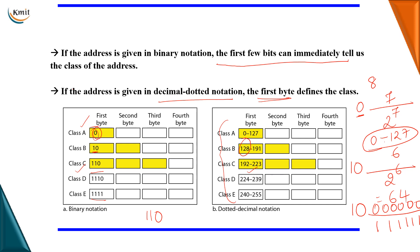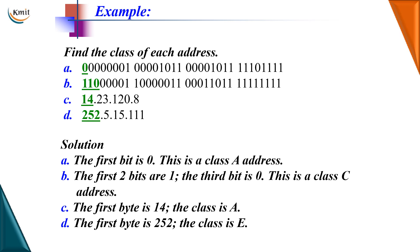For class C: with '1 1 0' fixed and five remaining bits, 2 to the power of 5 is 32. Binary '11000000' equals 192, confirming the class C range starts at 192. You don't need to memorize this — if you remember the bit patterns, you can calculate the decimal values. For example: if the first bit is zero it's class A; if the first two bits are '1 1' and third is '0' it's class C; decimal 14 is class A; decimal 252 is class E. Refer to the chart to verify.